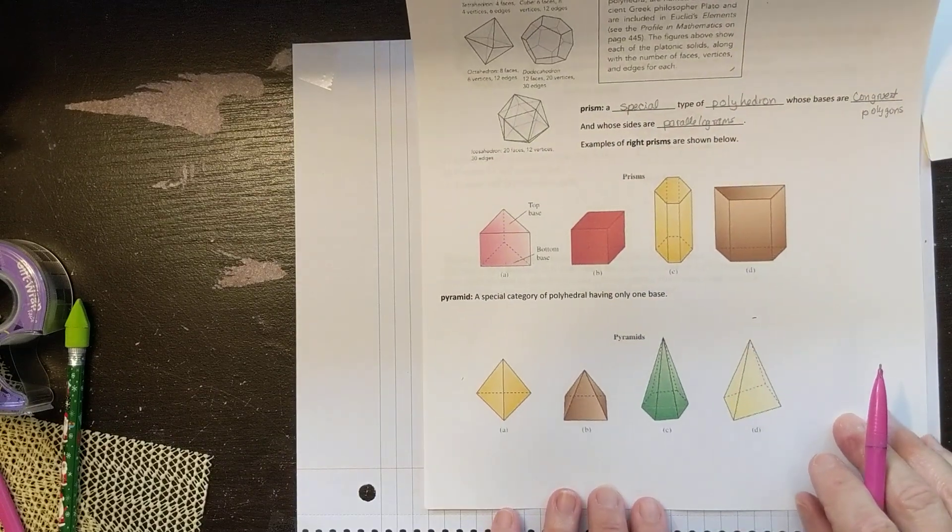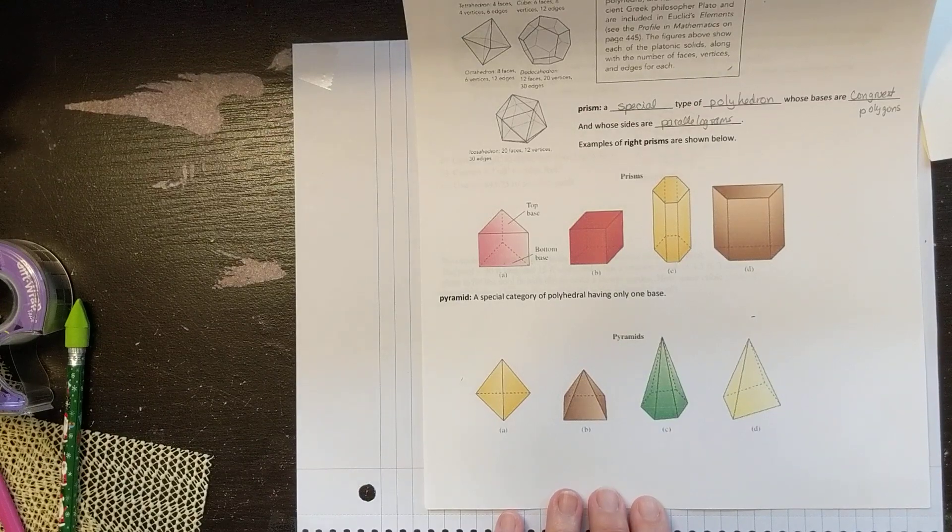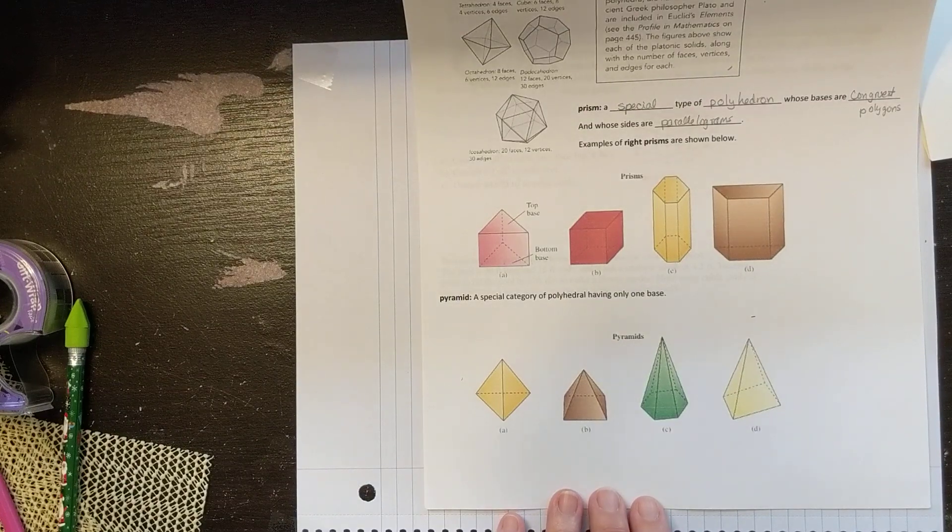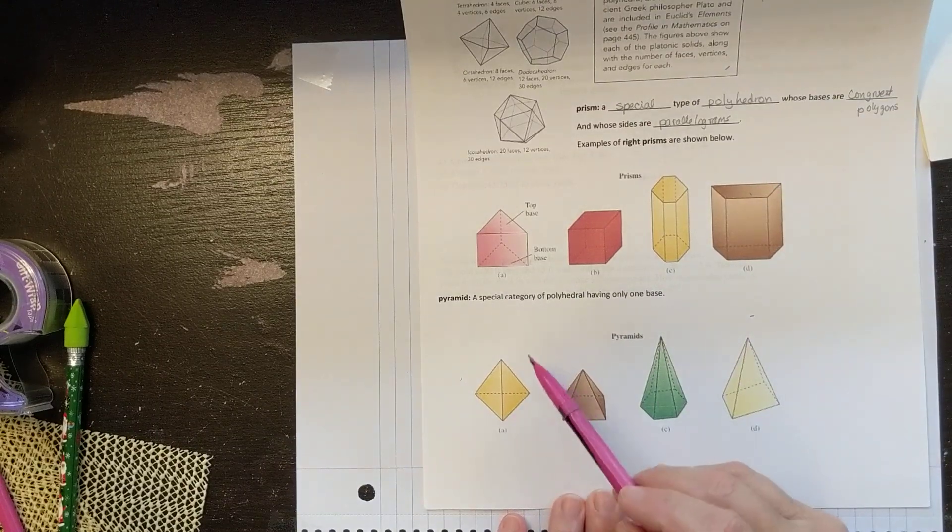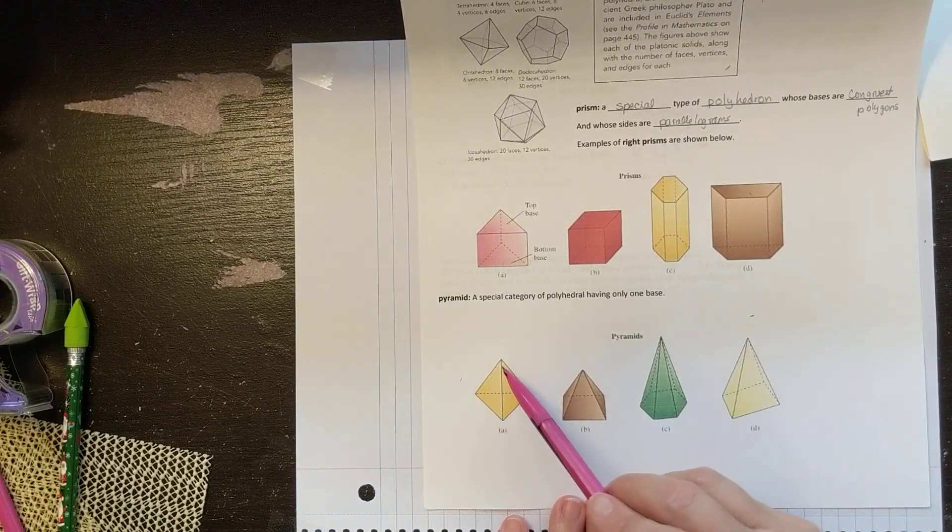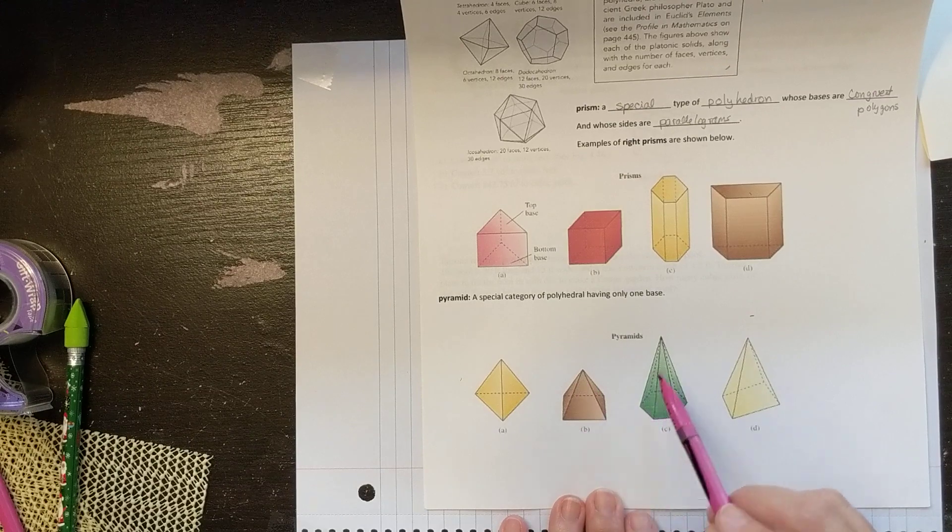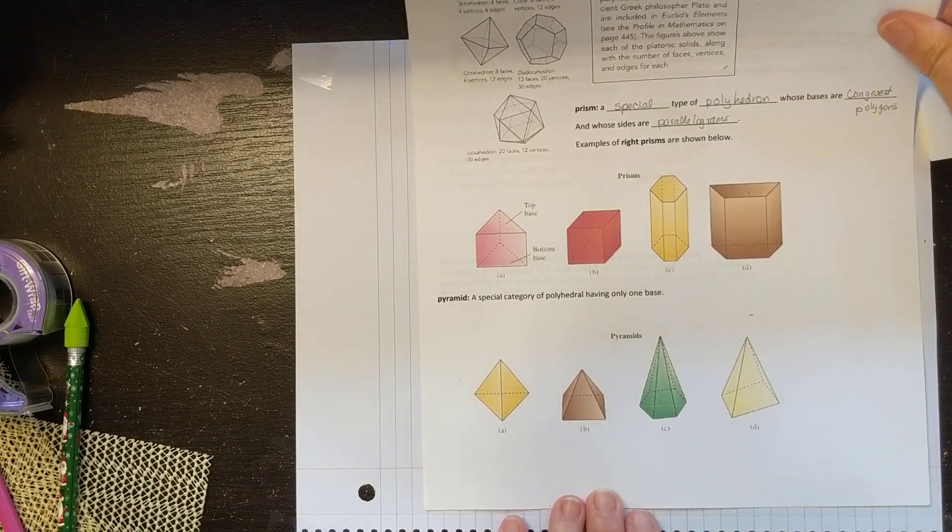A pyramid is a special category of polyhedra and it has only one base though. See, these have two bases. A prism has two bases. A pyramid just has one base and extends to a point like that. So these are pyramids.